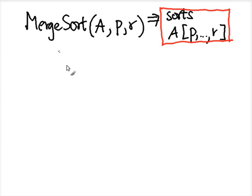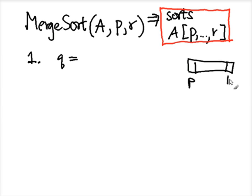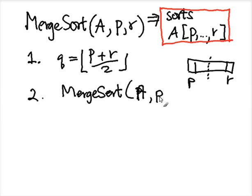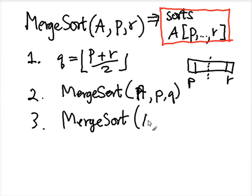To sort the array, the first step is to find the partition point. You want to sort from P to R, so the midpoint Q is something like the floor of (P + R) / 2. Then we recursively call merge sort on array A from P to Q, and then call merge sort on array A from Q+1 to R.